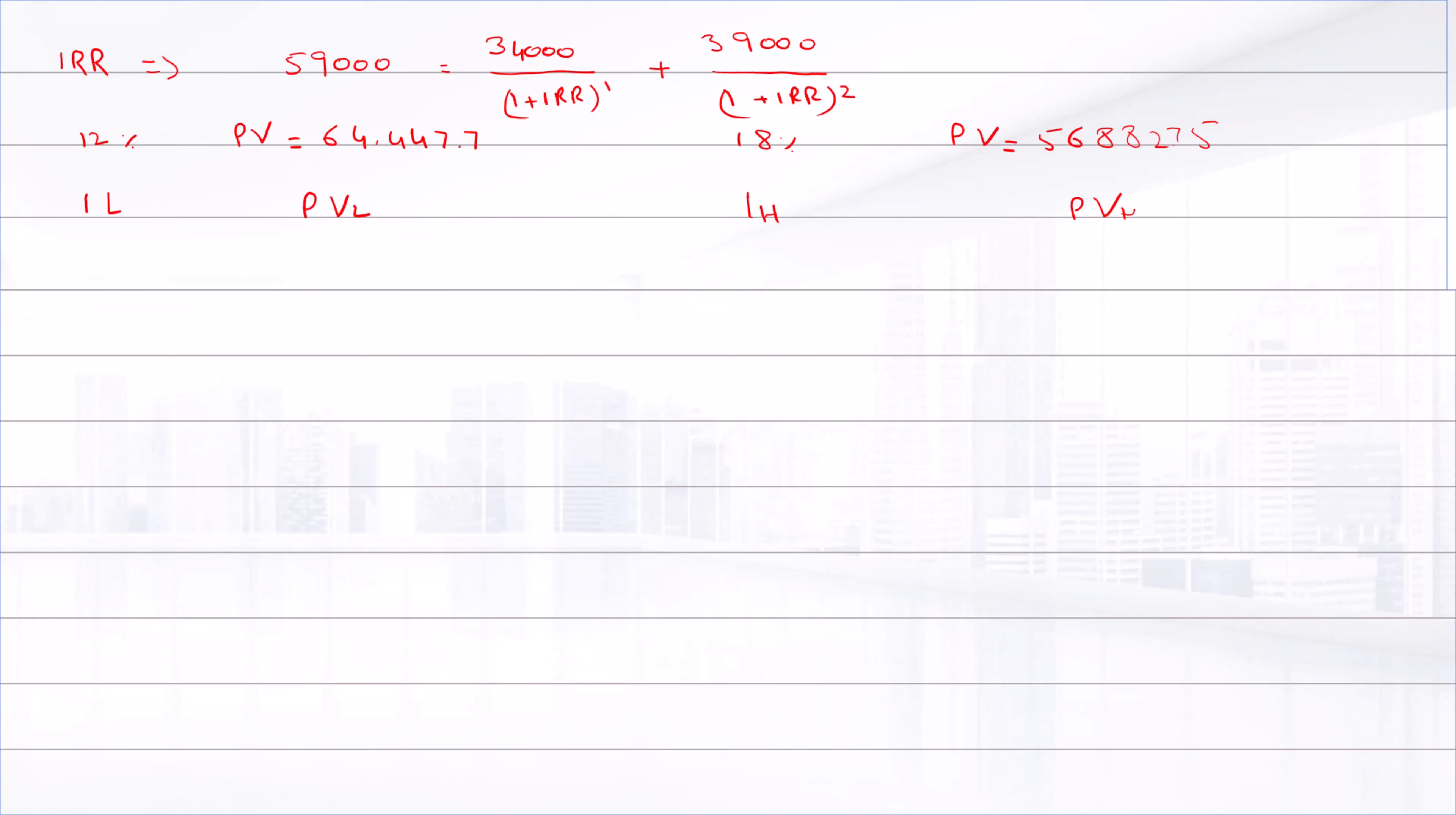And IRR equals IL plus (IH minus IL) times (present value L minus present value actual) divided by (present value L minus present value H). By putting values: 0.12 plus (0.18 minus 0.12) times (64,447.7 minus 59,000) divided by (64,447.7 minus 56,882.75), the final answer is 15.0712%.